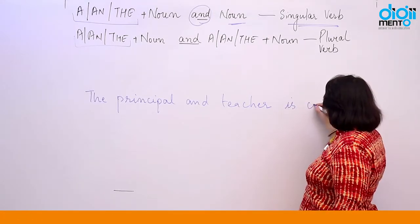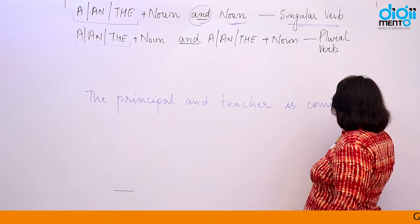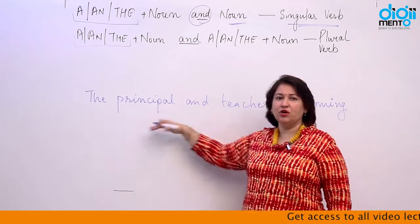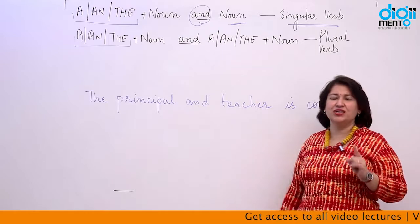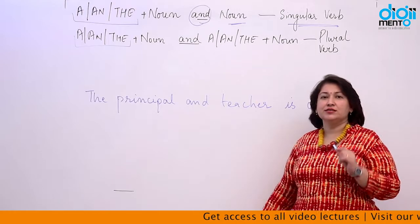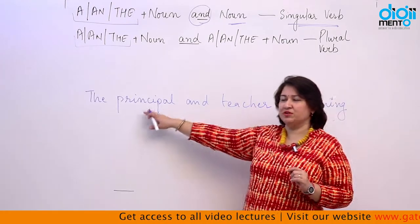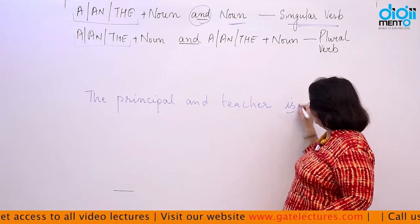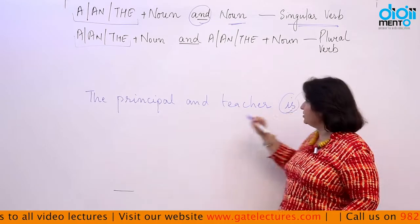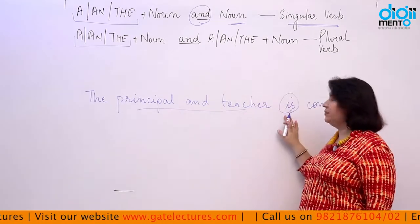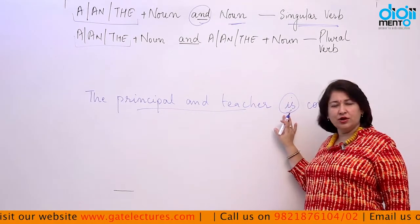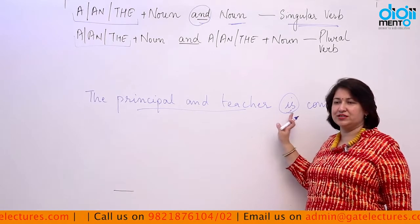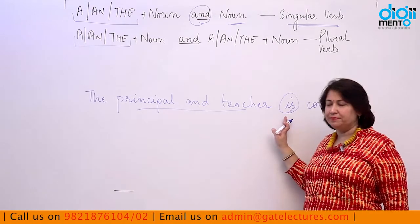Here, 'the principal and teacher' — we are talking about one person who is a principal as well as a teacher. So because it is a singular subject, the helping verb we use here will also be singular. For example: 'The principal and teacher is coming.'